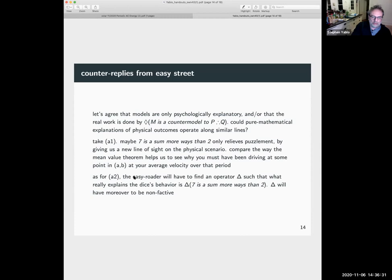Okay, now here's my counter replies from Easy Street. So let's agree that models are only psychologically explanatory and or that the real work is done by it's possible that M is a counterexample to P therefore Q. Maybe pure mathematical explanations of physical outcomes operate along similar lines. So take A1, maybe seven is a sum more ways than two, only relieves puzzlement by giving us a new line of sight on the physical scenario. I mean, think of the way that reasoning with the Bohr model of the atom can relieve puzzlement or to use an example that Penelope Matty uses a lot, think about the way in which reasoning with a model of the ocean according to which it's infinitely deep can relieve puzzlement about the phenomena.